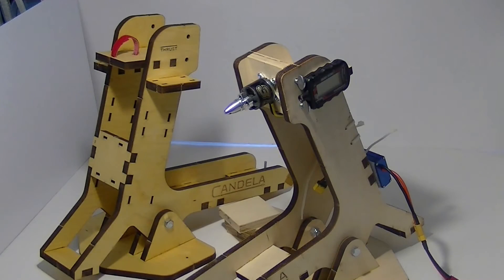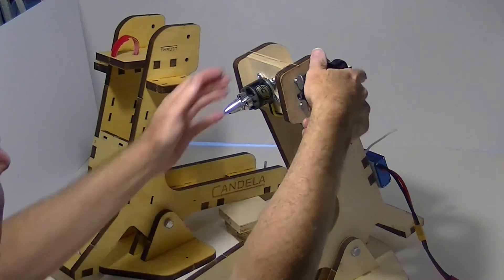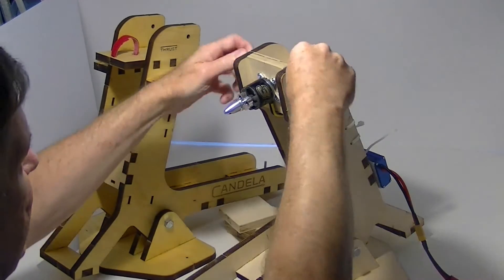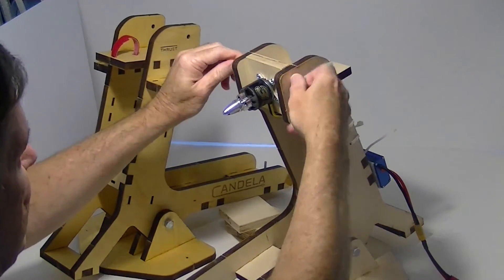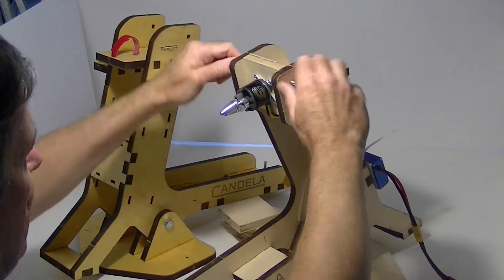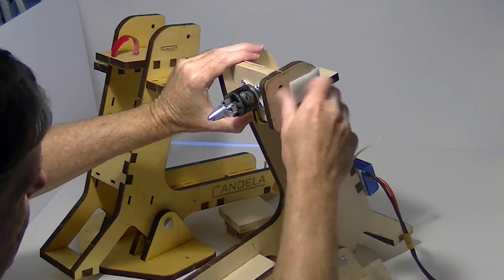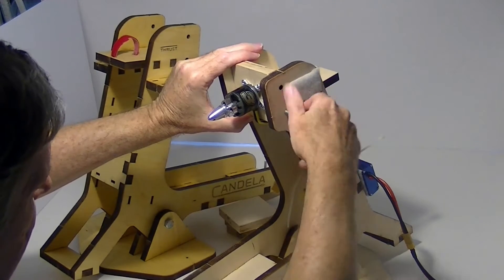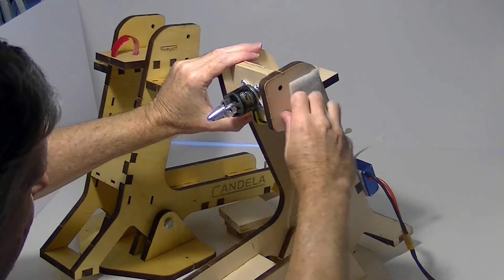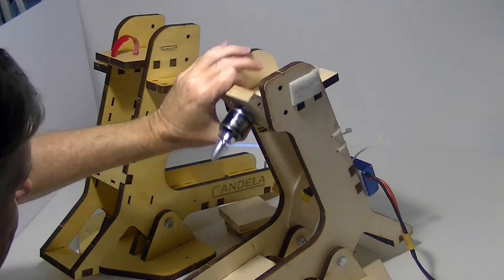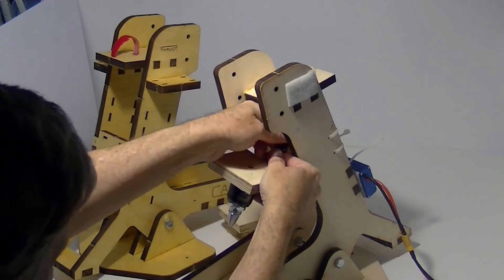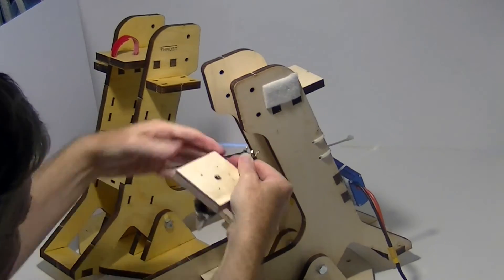Now, if I wanted to take this motor off and put it on the other, all I've got to do is take out these thumb screws. Once the thumb screws are removed, I can just disconnect the motor and take it out of there. Like that.